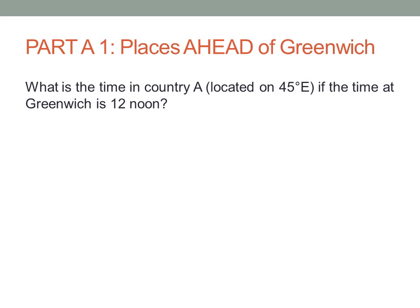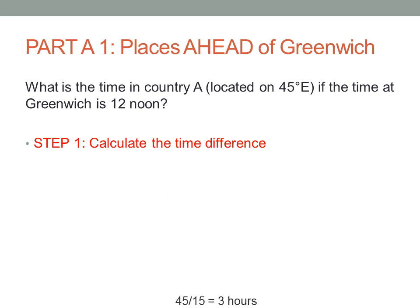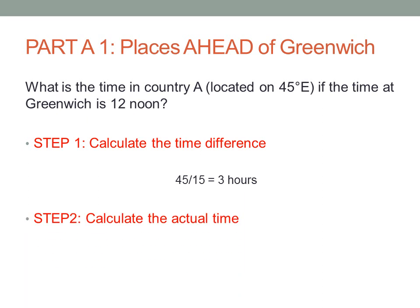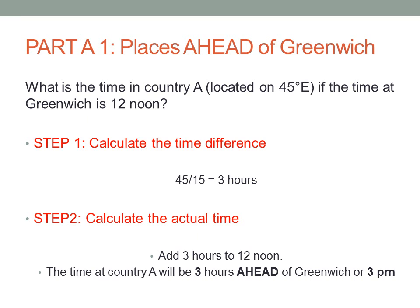Country A is located to the east of Greenwich, therefore this country will be farther ahead in time. To calculate the time, our first step involves calculating the time difference. To do so, we're going to divide 45 by 15, which will give us 3 hours. The time difference is 3 hours. Step 2, we're going to calculate the actual time. Considering that country A is east of Greenwich, 3 hours east, we're going to add 3 hours to 12 noon. The time at country A will be 3 hours ahead of Greenwich, or 3 p.m.